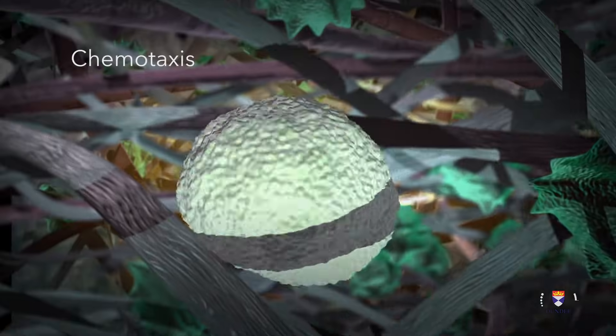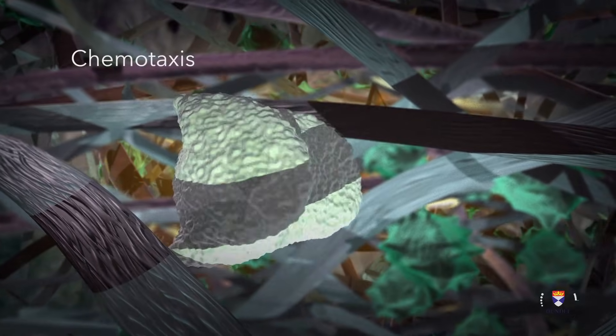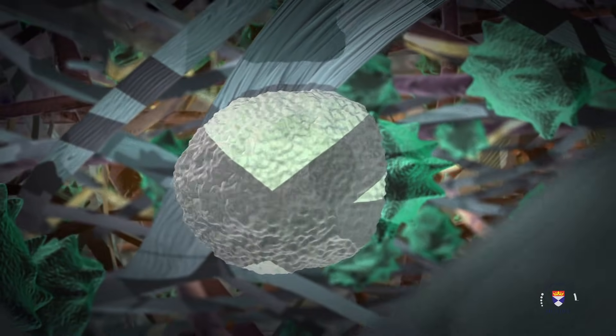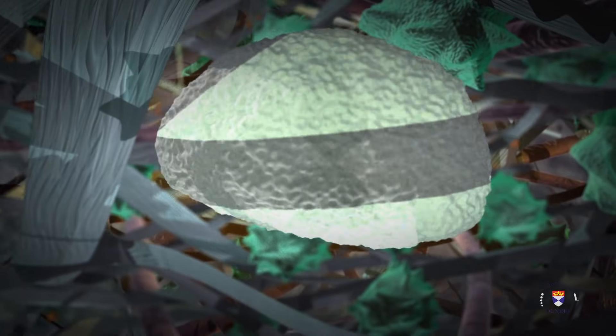Once in the extravascular space, the leukocyte begins to migrate to the site of injury by following a chemical gradient. A common signaling chemical is C5A of the complement system.